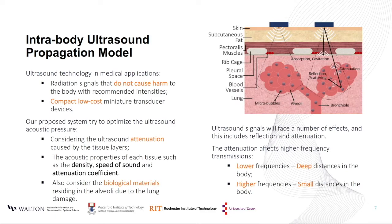Ultrasound technology is very useful and accepted in medical applications due to its radiation signals that do not cause harm to the body if the recommended intensities and frequencies are used. The ultrasound transducers are compact, low-cost miniature devices, and numerous technologies are being developed to make them more portable. Our proposed system aims to optimize the application of the ultrasound acoustic pressure, taking into consideration the amount of attenuation that the signal will suffer, the tissue acoustic properties such as speed of sound, the attenuation coefficient and density, and for patients with COVID-19, the presence of infected biological materials residing within the alveoli.